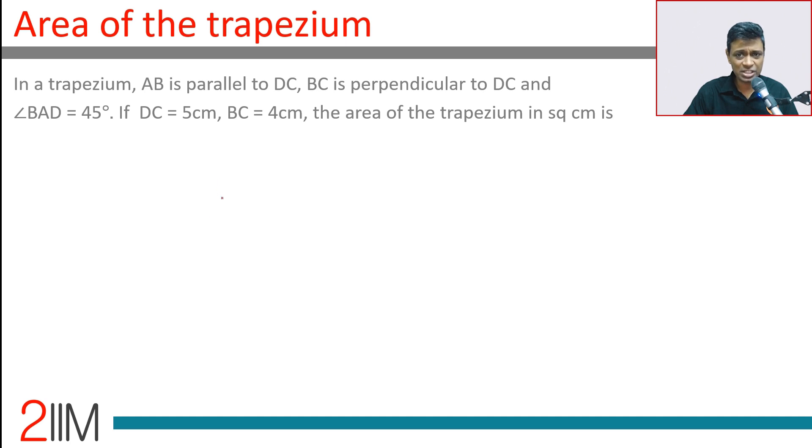ABCD - this is DC. This is 90 degrees, and AB is parallel. DC is 5, BC is 4, angle BAD is 45.